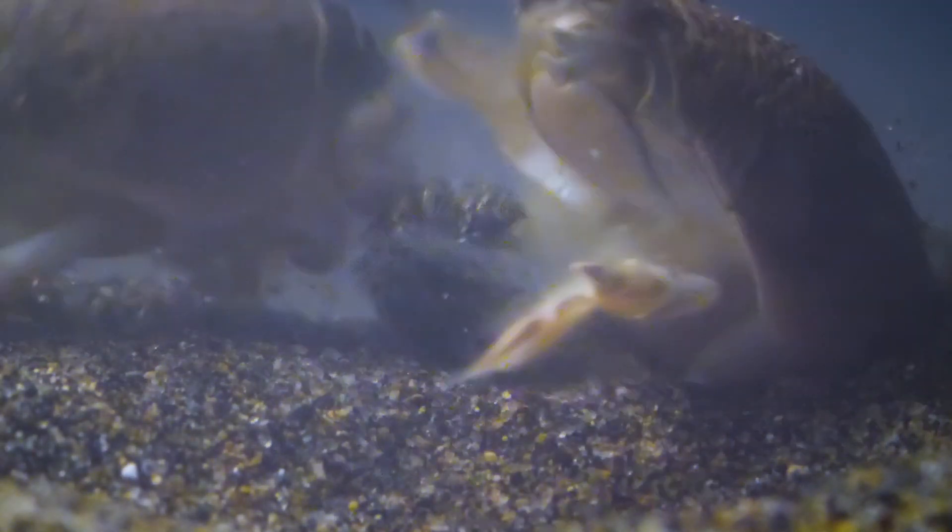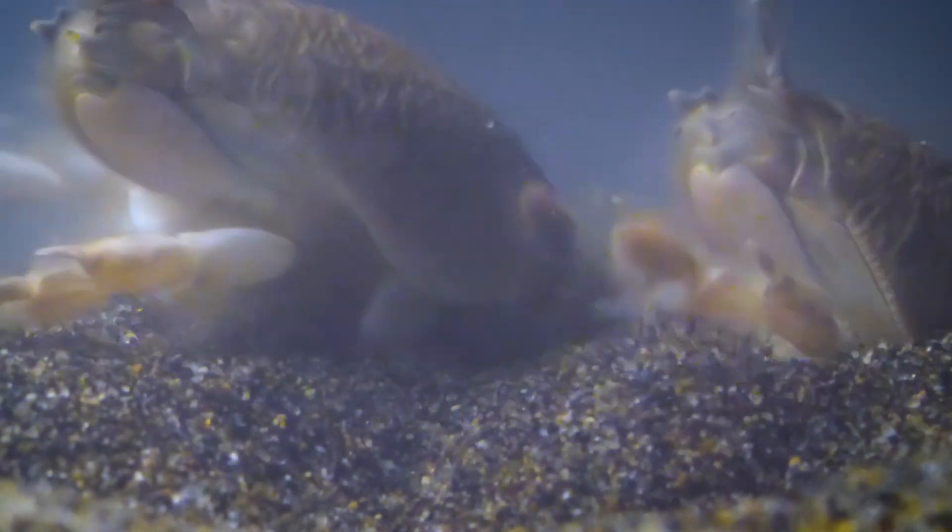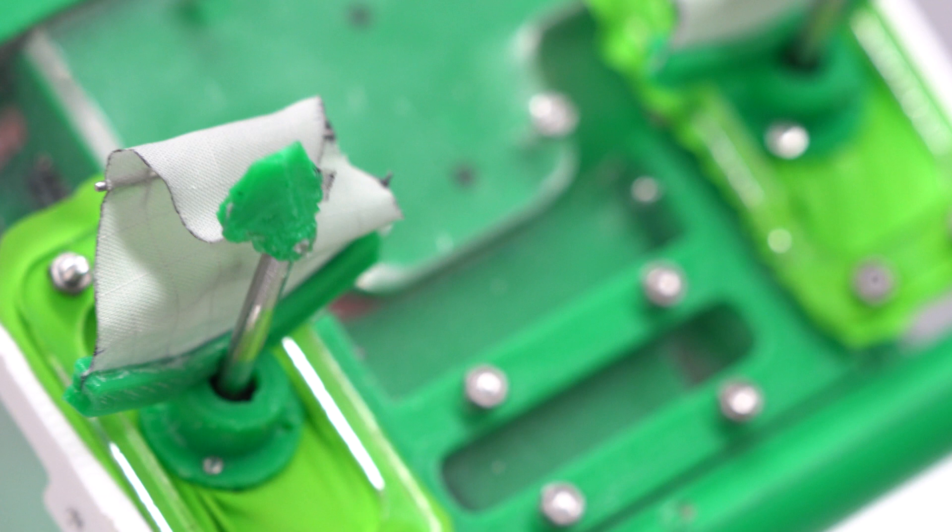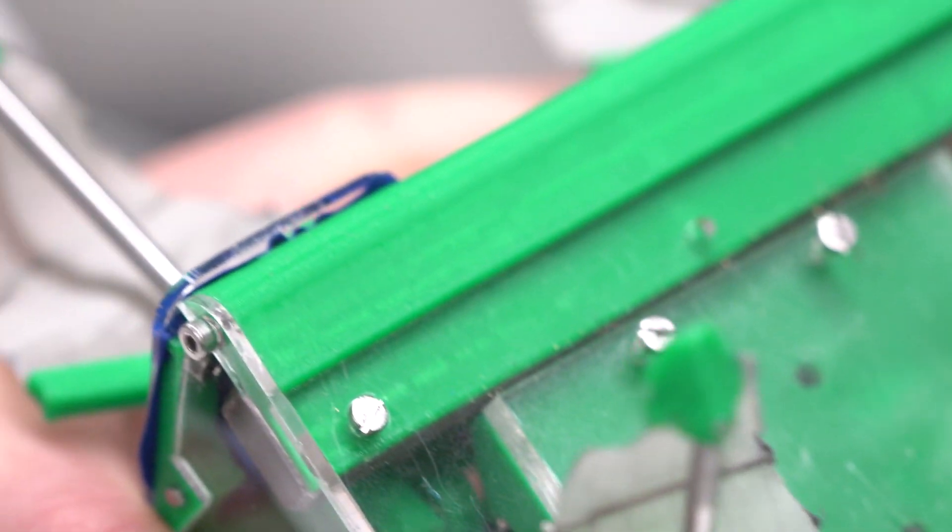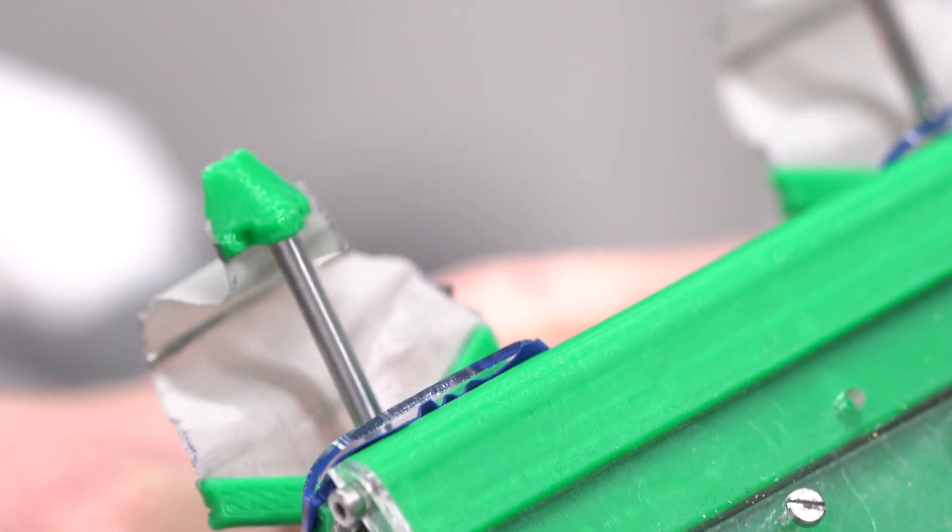Real mole crabs have these legs that feather out as they sweep through the granular media, and in a similar way we use fabrics to create a feathering mechanism to emulate this type of behavior.